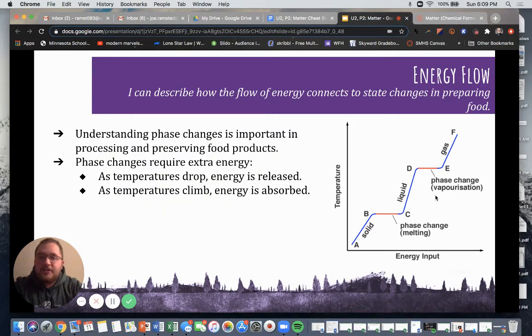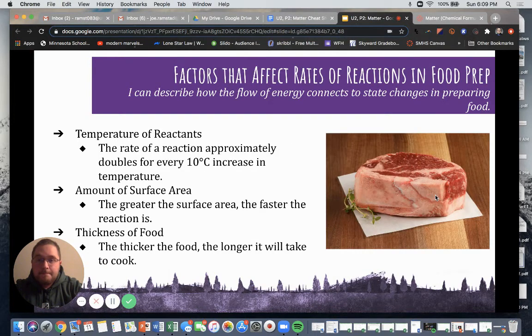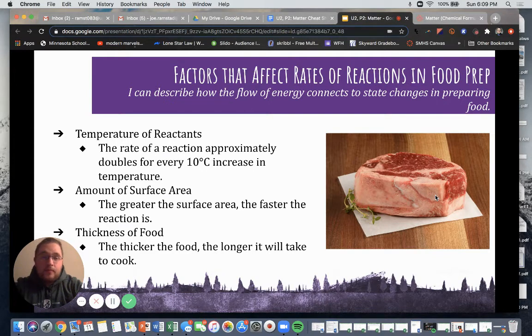Understanding phase changes is important in processing and preserving our different foods. Phase changes require extra energy. And as temperature drops, the energy is released. And as temperatures climb, energy is absorbed. So it's important to understand this simply from a food processing standpoint, because when we cook something like a steak, a lot of these concepts can be applied.